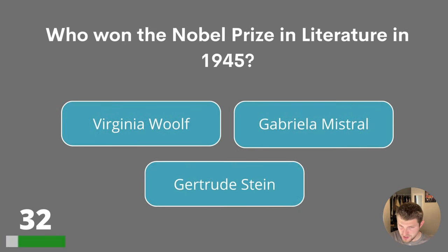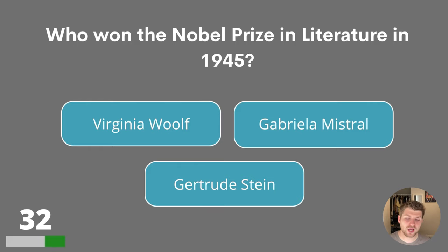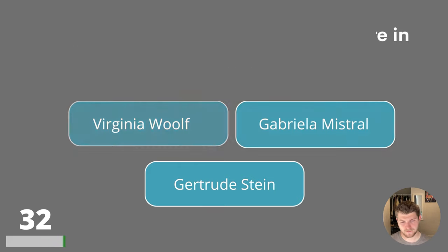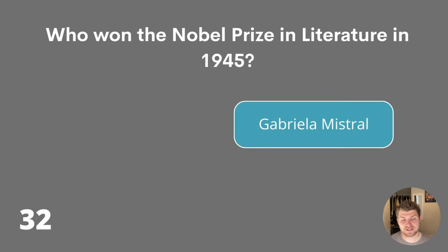Question thirty-two. Who won the Nobel Prize in Literature in 1945? Virginia Woolf, Gabriela Mistral or Gertrude Stein? The answer is Gabriela Mistral.